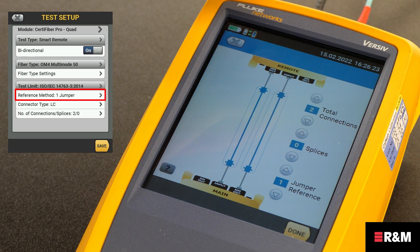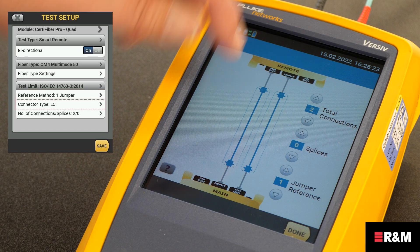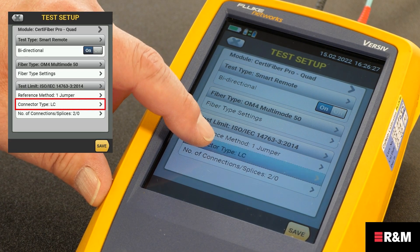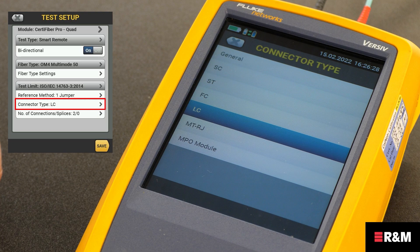The tester saves this setting and can be seen with every result. Select the type of connector used in the cabling to be tested, such as SC or LC. The tester also saves this setting to be seen with every result. Selections here won't change any performance limits in the test, they are purely for information. If the correct type is not on the list, just select General.